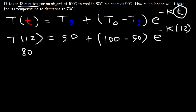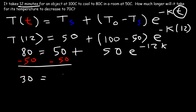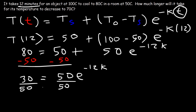So we have: 80 equals 50 plus the difference between 100 and 50, which is 50, times e to the negative 12k. Let's solve for k by subtracting 50 from both sides: 30 equals 50 times e to the negative 12k. Then dividing both sides by 50 gives 3/5 equals e to the negative 12k.